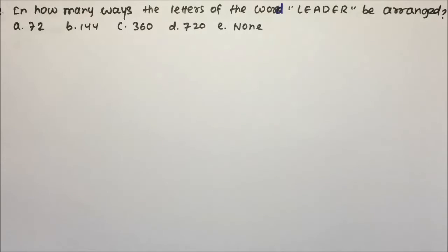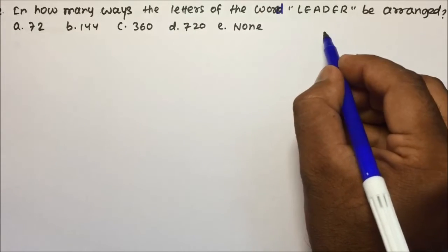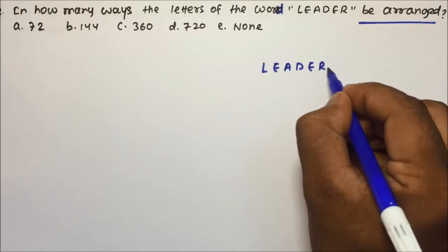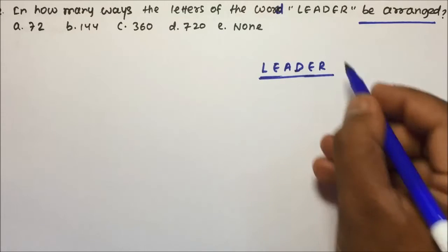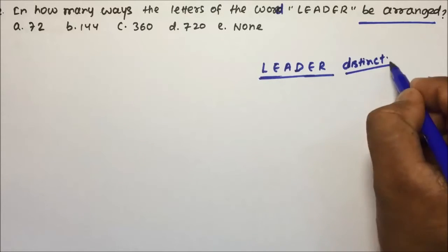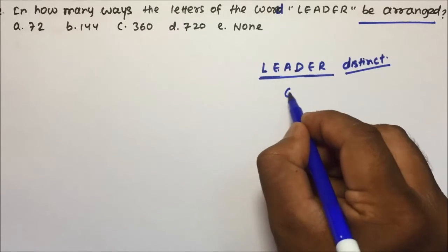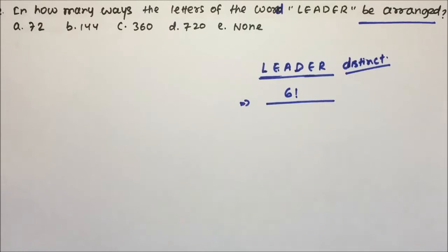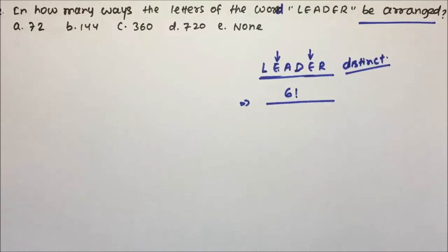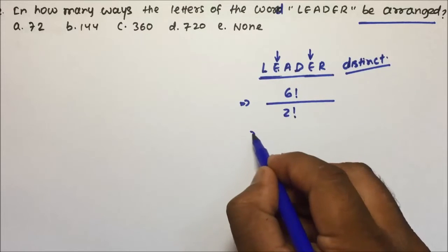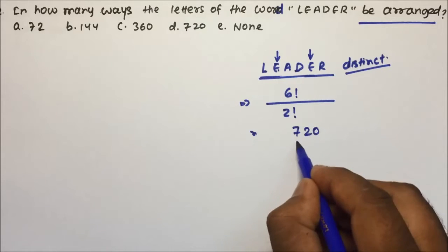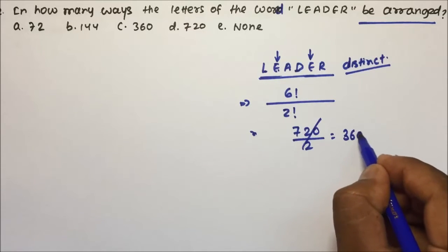Moving to question number 2: in how many ways can the letters of the word LEADER be arranged? The word is L-E-A-D-E-R. If all letters were distinct, we would have 6 factorial ways. But here E is repeated 2 times, so we divide by 2 factorial. That gives us 6 factorial divided by 2 = 720 / 2 = 360.